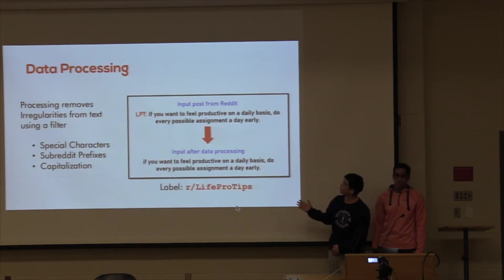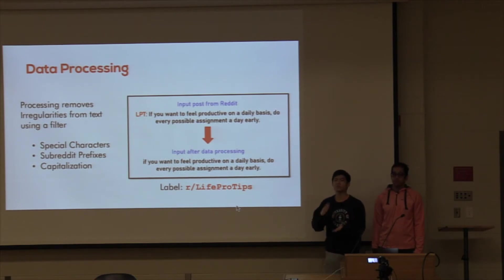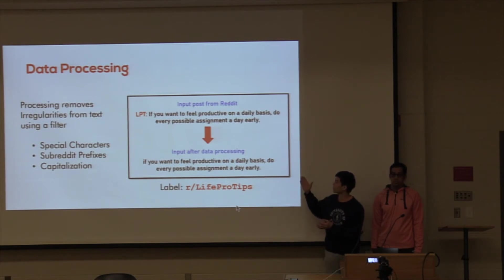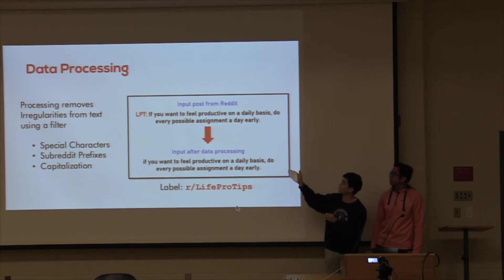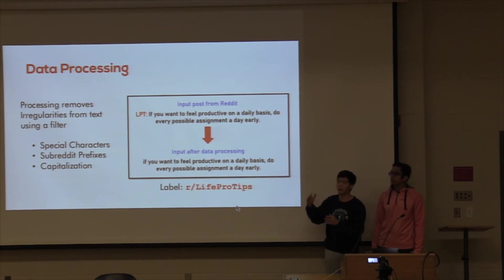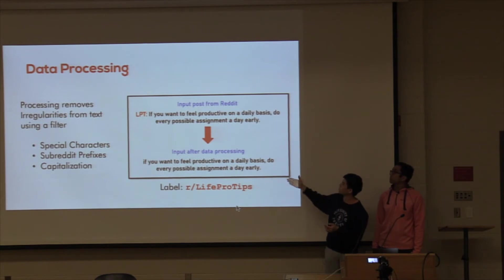For the actual data processing procedure, we took the text and normalized it to make sure all inputs have a fair playing field. We removed all special characters, removed all subreddit prefixes — since certain posts have prefixes designating which subreddit they're posted to — and removed all capitalization. For example, here is a post that's been processed, and it comes from the subreddit Life Pro Tips.